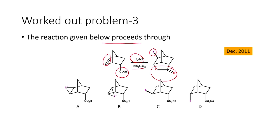Four possible intermediates are presented: two involving a cyclic iodonium intermediate and two involving a carbocation intermediate. We have to determine which is the actual intermediate through which the reaction proceeds.